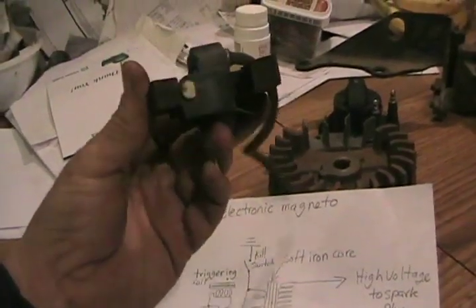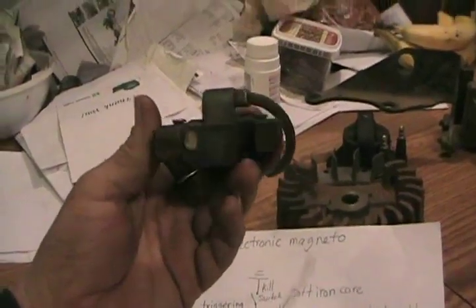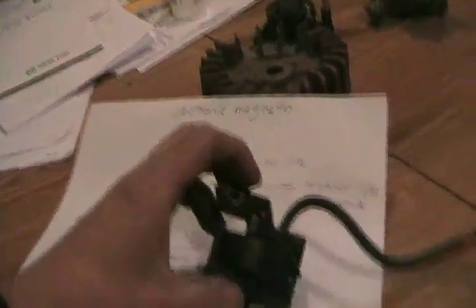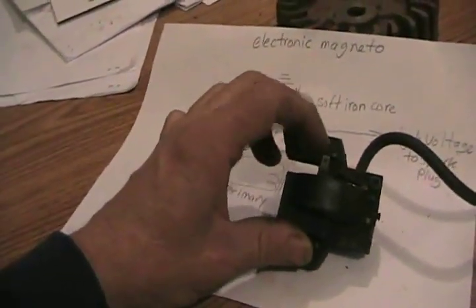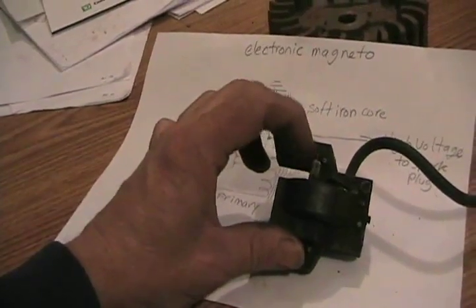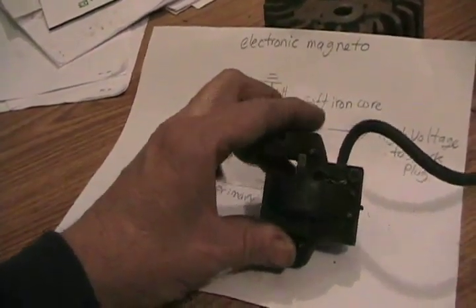Now in any lawnmower engine, or small engine, if you can find an electronic magneto and it used to have points and condenser, just cut all the wires going to the points and condenser, install the electronic magneto if it fits in place, and you've instantly converted it to electronic ignition. No modifications necessary, and there's your kill wire. If you put a switch from there to ground, that would shut it off.